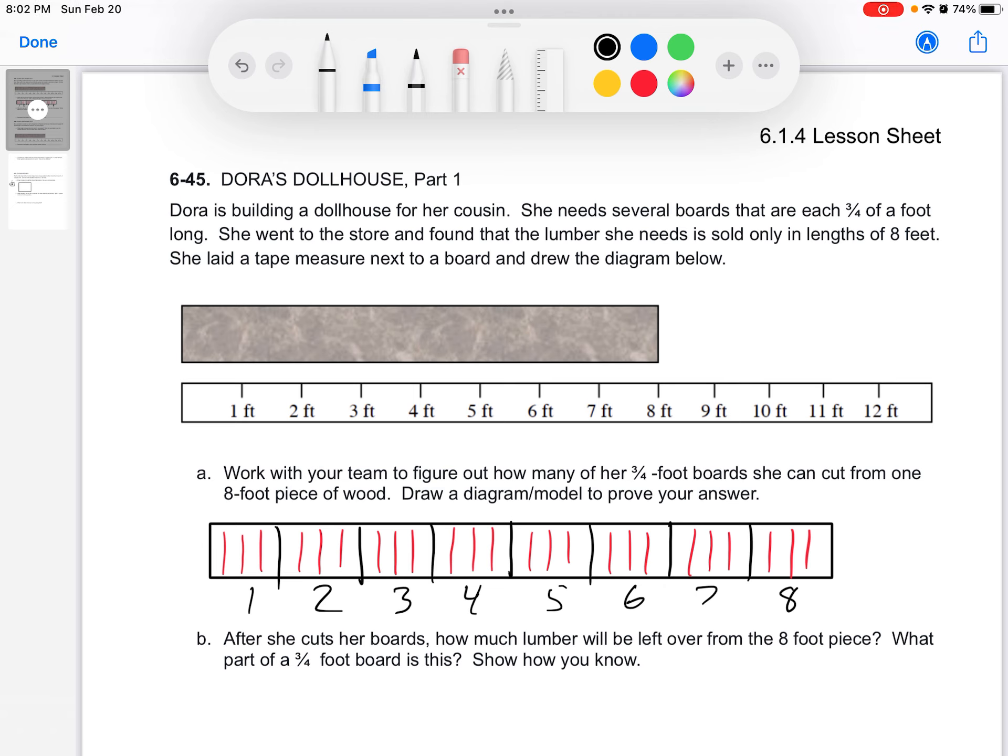So Dora's building a dollhouse for her cousin. She needs several boards that are each three-quarters of a foot, just like the last problem. She went to the store and found out the lumber she needs is only sold in lengths of eight feet. She laid that tape measure. We see that picture below, just like last time again. Part A, work with your team to figure out how many of her three-quarter foot boards she can cut from one eight-foot piece of wood. Draw a diagram and model to prove.